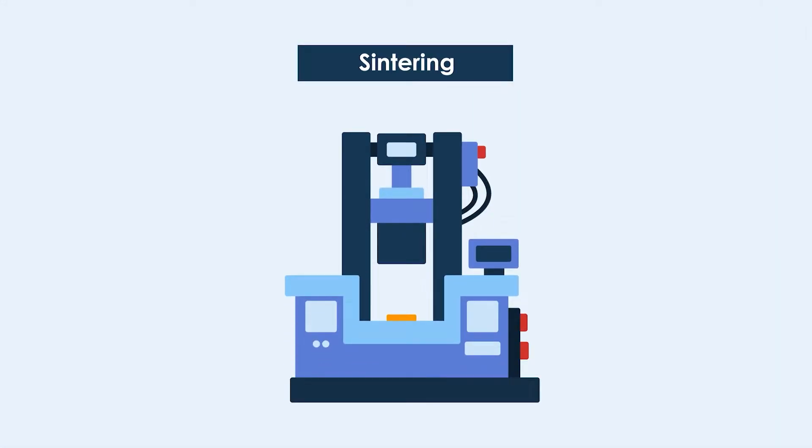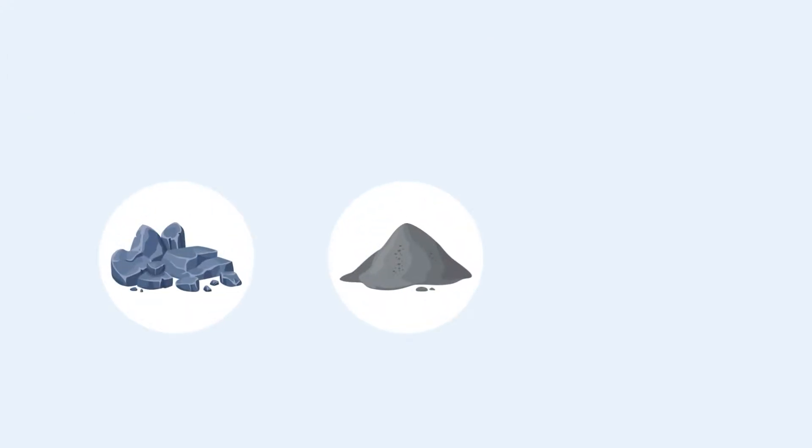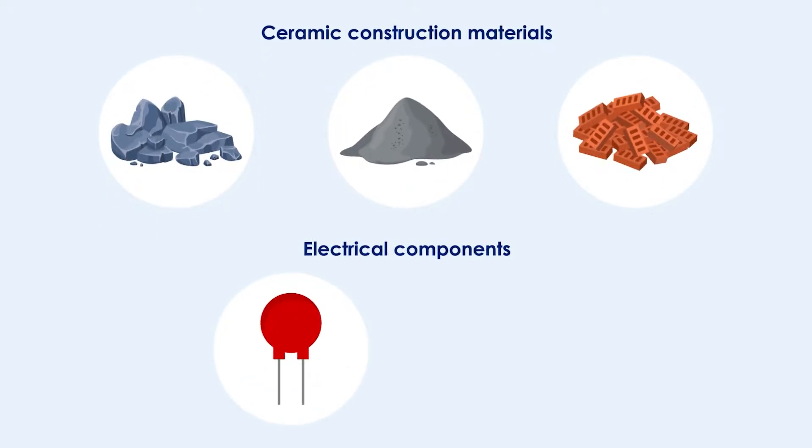Sintering is a process in which fine powders are turned into solid hardened masses by applying pressure or temperature. It is commonly used for manufacturing ceramics used in construction materials and electrical components.